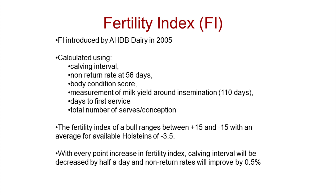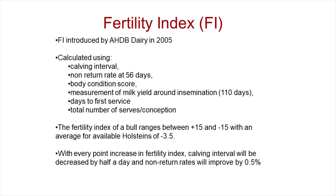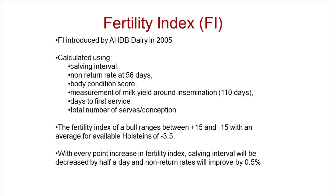The Fertility Index ranges between plus 15 and minus 15. A number of years ago the average was negative — more bulls were having a negative effect on fertility than a positive one — but it's suspected to have improved in recent years. For every point the fertility index improves, calving interval will decrease by half a day and non-return rates improve.